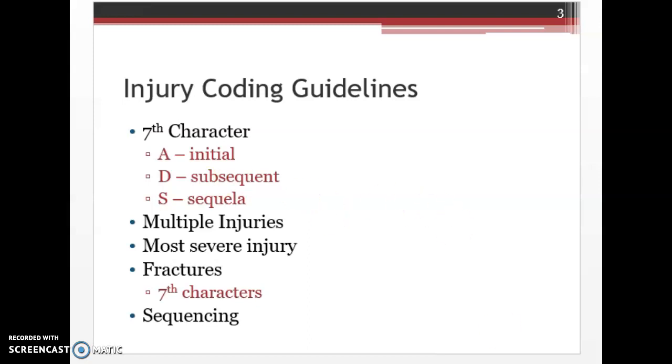And then S is for sequela. Sequela is when a complication has arose from a direct result of that injury. So when you're coding the 7th character of sequela, you code both the injury that caused the sequela and the sequela itself, putting the 7th character of S on the injury code to show that the injury now has a sequela. Our sequencing rules tell us we put the sequela code first and then the injury that caused the sequela second.